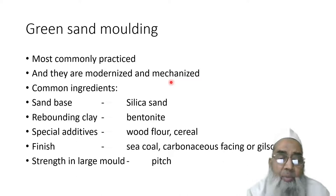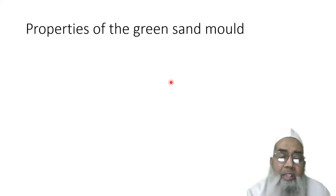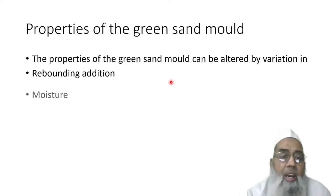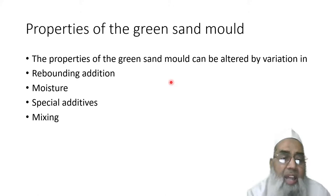Strength in large molding can be obtained by applying pitch in the green sand mold. Therefore, the properties of the green sand mold can be adjusted by varying rebounding clay addition, moisture content, special additives, and mixing ratios.